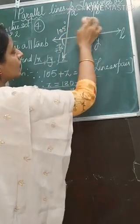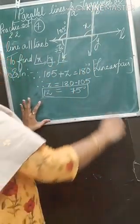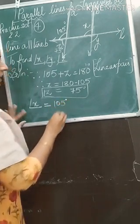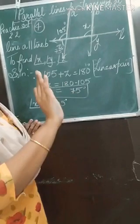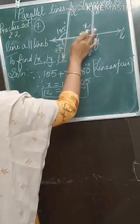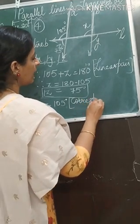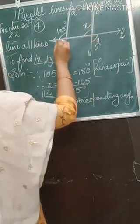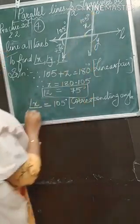Now I know these two lines are parallel. If I look carefully, this angle and this angle are corresponding angles. So angle X equals 105 degrees directly. No need to name an intermediate angle — just write angle X equals 105 degrees. Reason: they both are corresponding angles. So whatever is 105, the same applies for angle X.